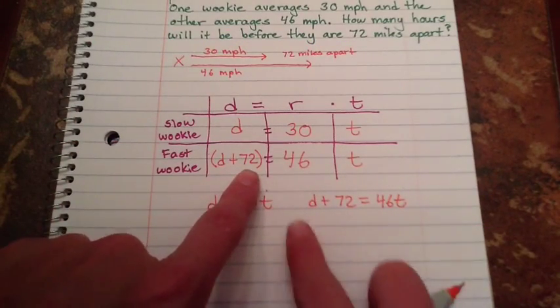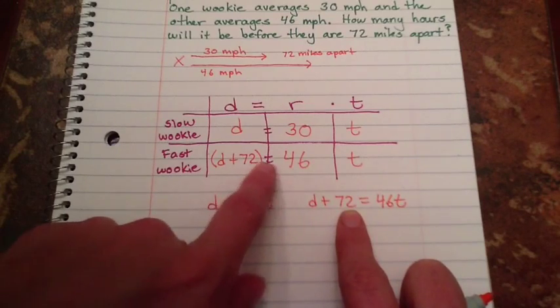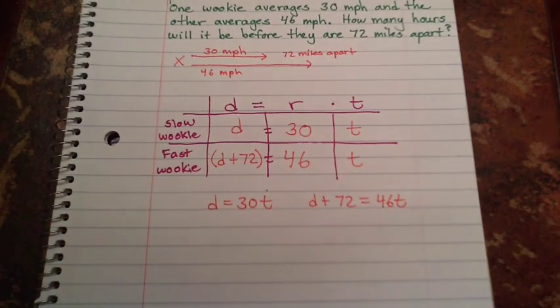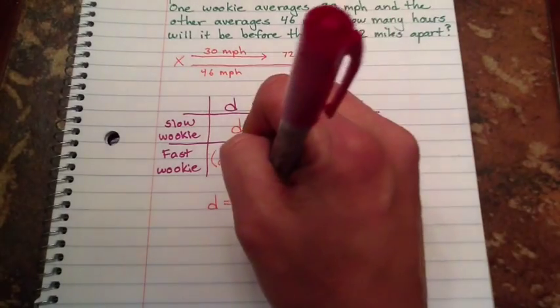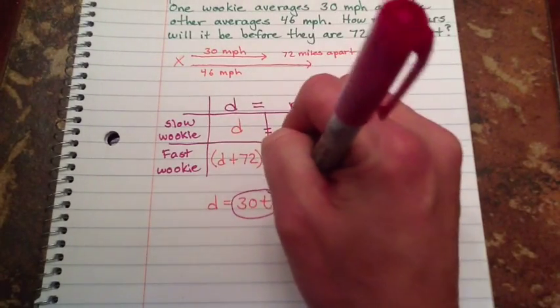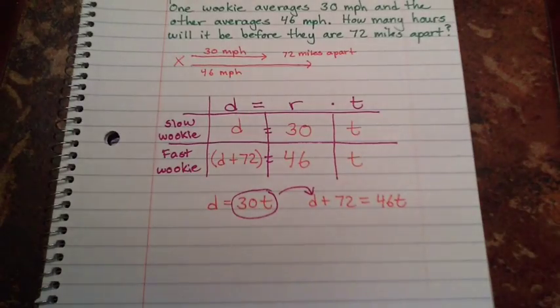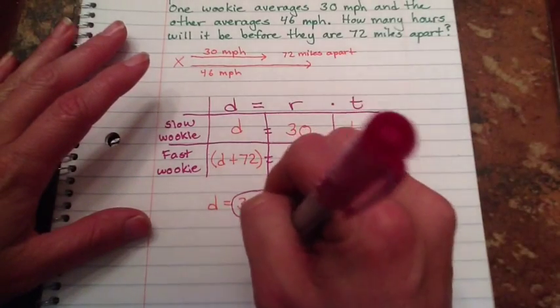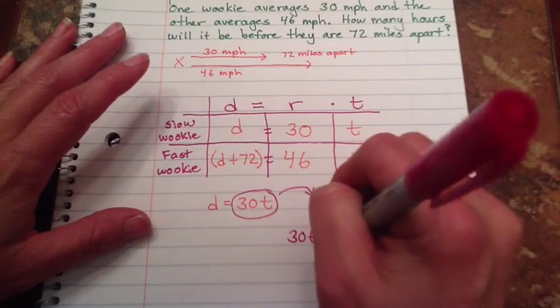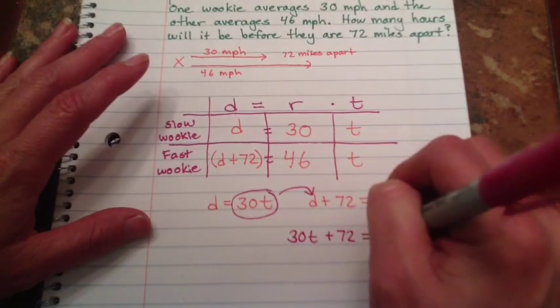Distance plus 72, didn't have anything to distribute to it, equals 46t. And most of you probably realize right away, this is set up for substitution. So I end up with 30t plus 72 equals 46t.